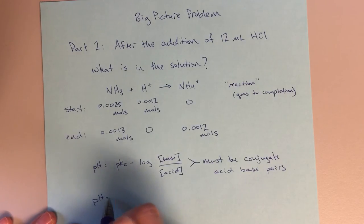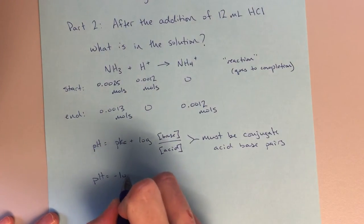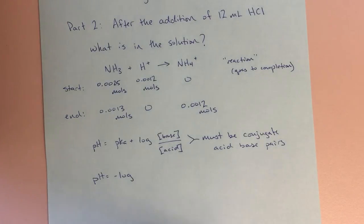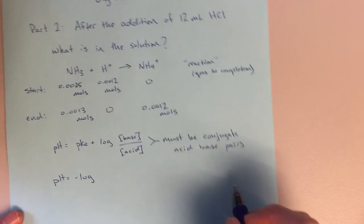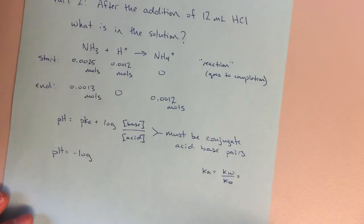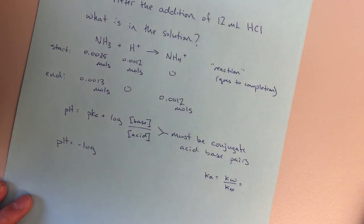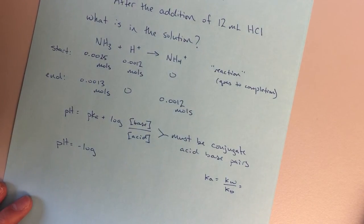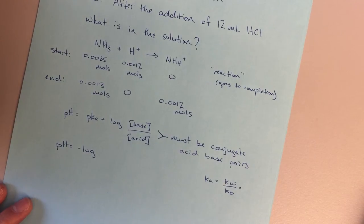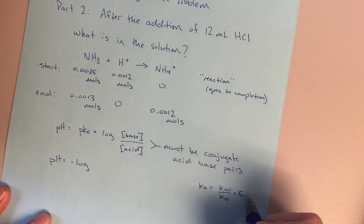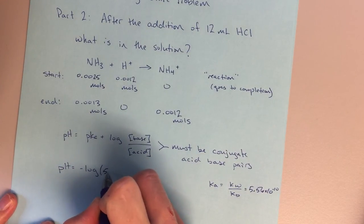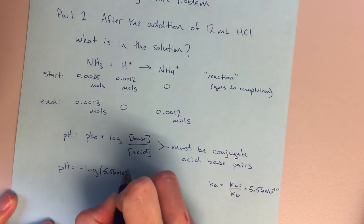So to solve for the pH, the pKa is going to be the minus log of... Oh, I need to solve for the Ka real quick. So I'll just write it over here. Ka is going to equal Kw over Kb. So my Ka is equal to 5.56 times 10 to the minus 10th. So that'll be what I put in here.